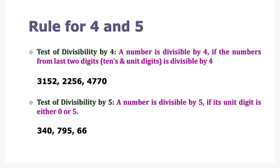Now let's see the test of divisibility by 5. A number is divisible by 5 if its unit digit is either 0 or 5. In the case of 795, the unit digit is 5, so it is divisible by 5. But in the case of 66, the unit digit is neither 0 nor 5, so 66 is not divisible by 5.